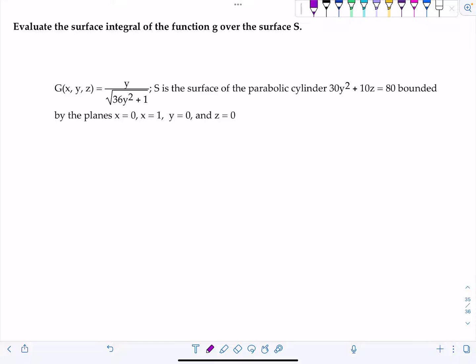g of x, y, z equals y over the square root of 36y squared plus 1. S is the surface of the parabolic cylinder 30y squared plus 10z equals 80, bounded by the planes x equals 0, x equals 1, y equals 0, and z equals 0.